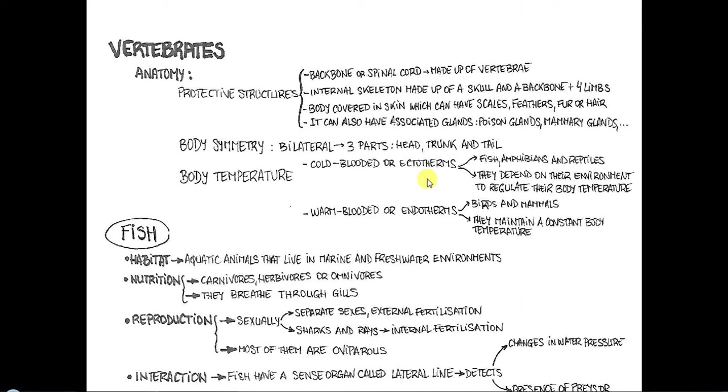The body is symmetry. They are bilateral with three parts: head, trunk and tail. And the body temperature classifies them in two groups: cold blooded or ectotherms and warm blooded or endotherms. In the first case we have the fish, amphibians and reptiles. They depend on their environment to regulate their body temperature. In the case of the endotherms, birds and mammals, they maintain a constant body temperature.